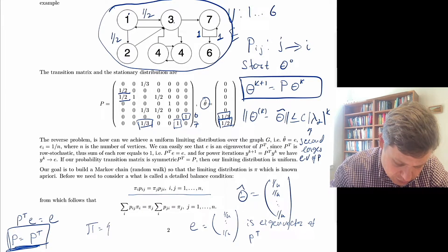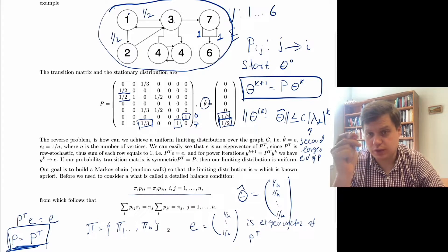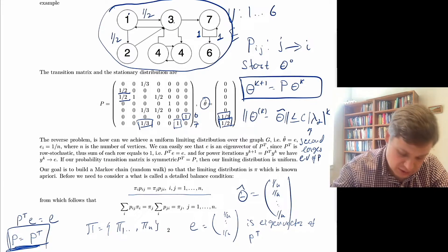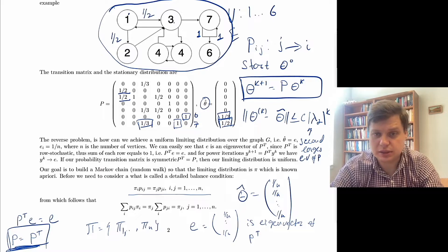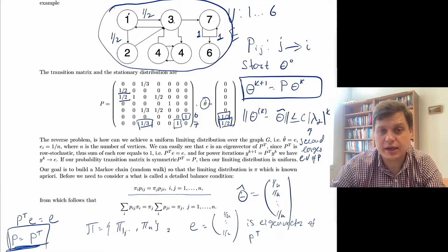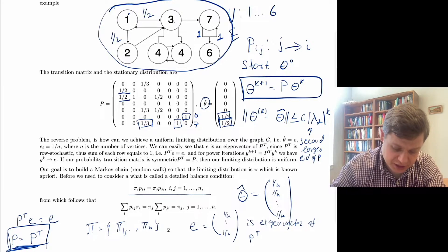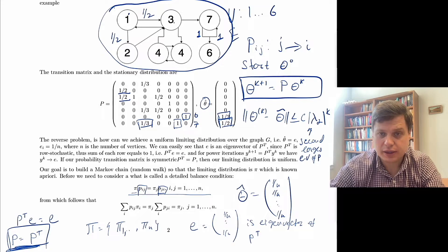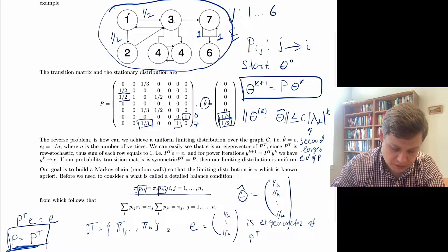The detailed balance equation is a slightly stronger condition, but the symmetry intuition gives some sense of why we want it. The balance equation tells us: if we have a stationary distribution pi — a sequence pi_1 through pi_n — for each node we have a number pi that tells us the average amount of time we're going to spend in each vertex. What we want is pi_i times p_ij equal to pi_j times p_ji, where those are transition probabilities.